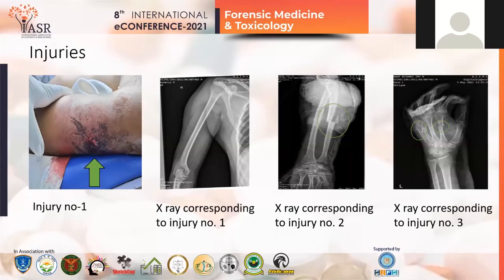Injury number two — I did not have a photo of this injury. It was a swelling of size 8×4 cm present over the upper one-third of the left forearm. The age of the injury was fresh; the swelling was warm on touch, and the weapon used was blunt. The corresponding X-ray showed a comminuted displaced fracture of the shaft of the left ulna, so injury number two is grievous in nature.